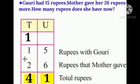Rupees with Gowri: 15. Rupees that mother gave: 26. Children, you know always first add in the unit place. 5 units plus 6 units is equal to 11 units. So we write 1 in the unit place and 1 ten is carried over and written in the tens place. Now in the tens column, 1 plus 1 plus 2 tens make 4 tens. So Gowri has 41 rupees total.